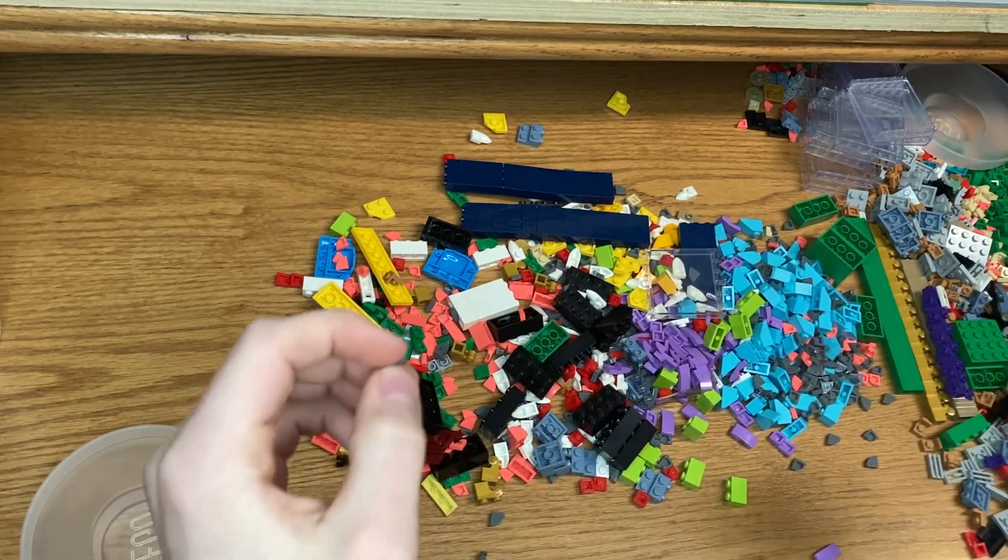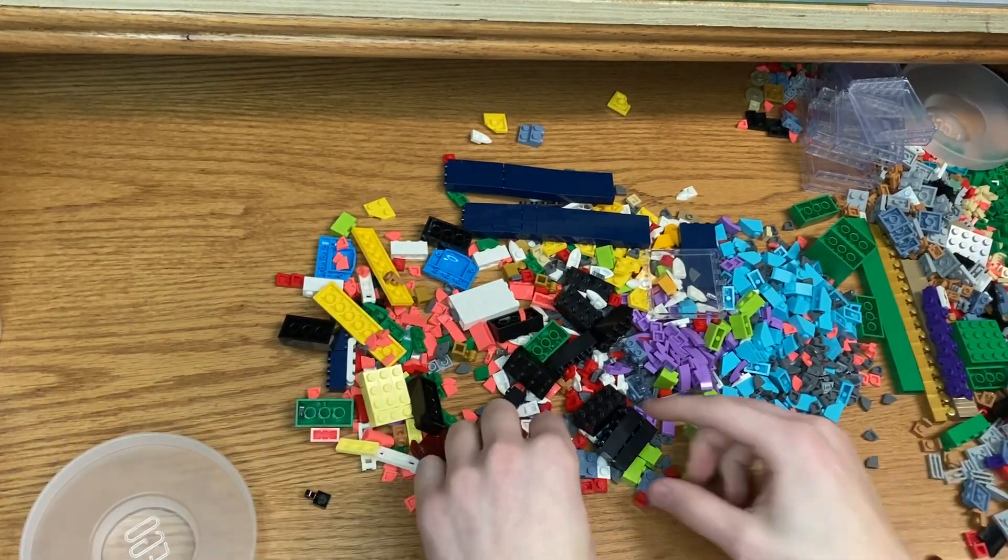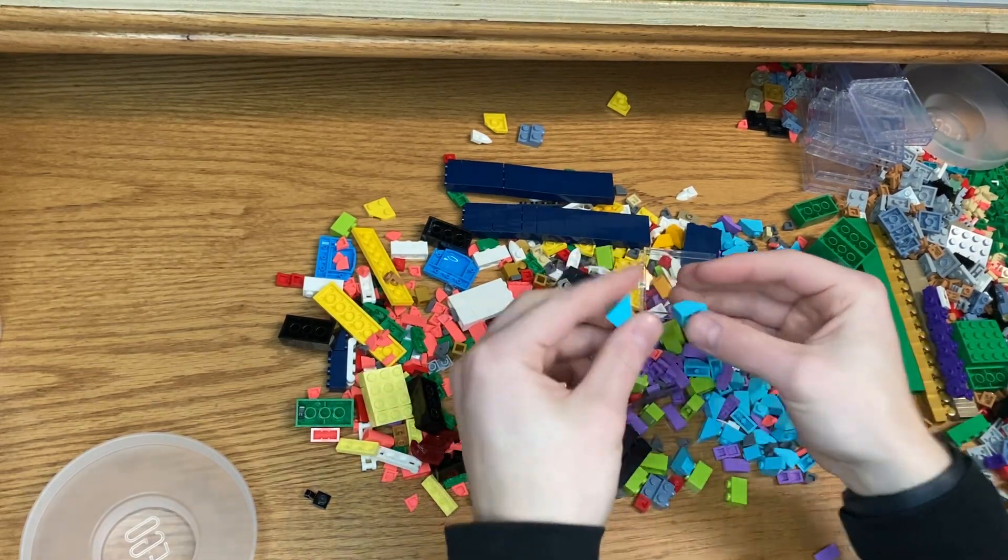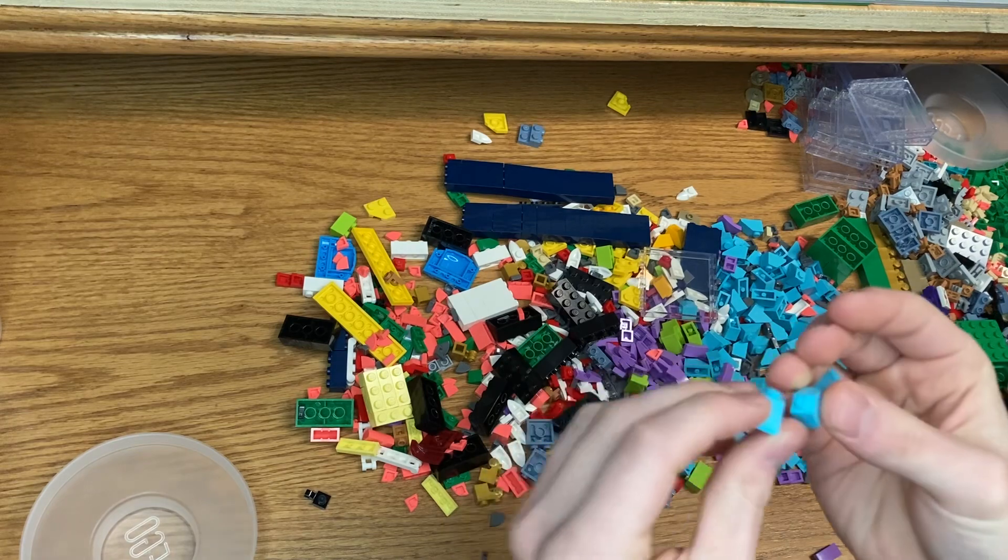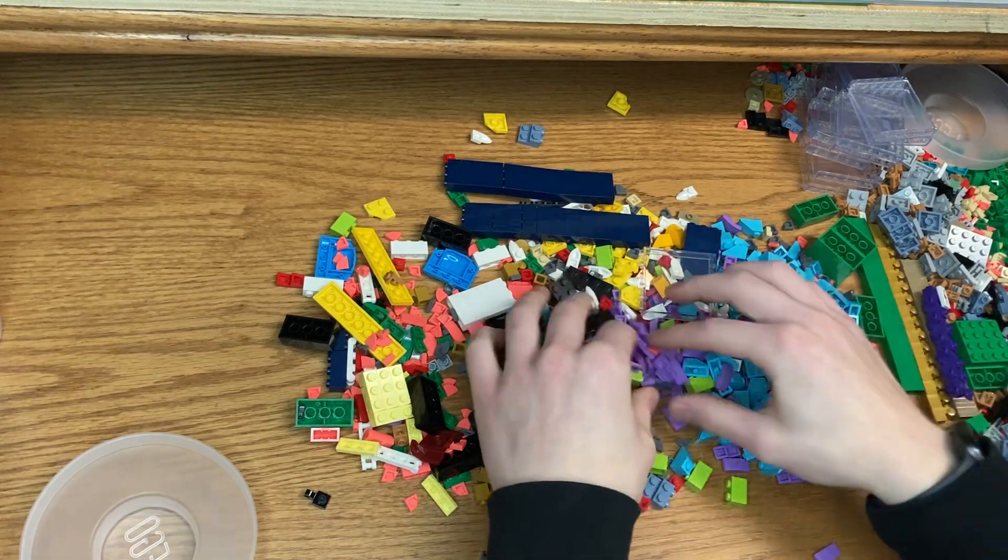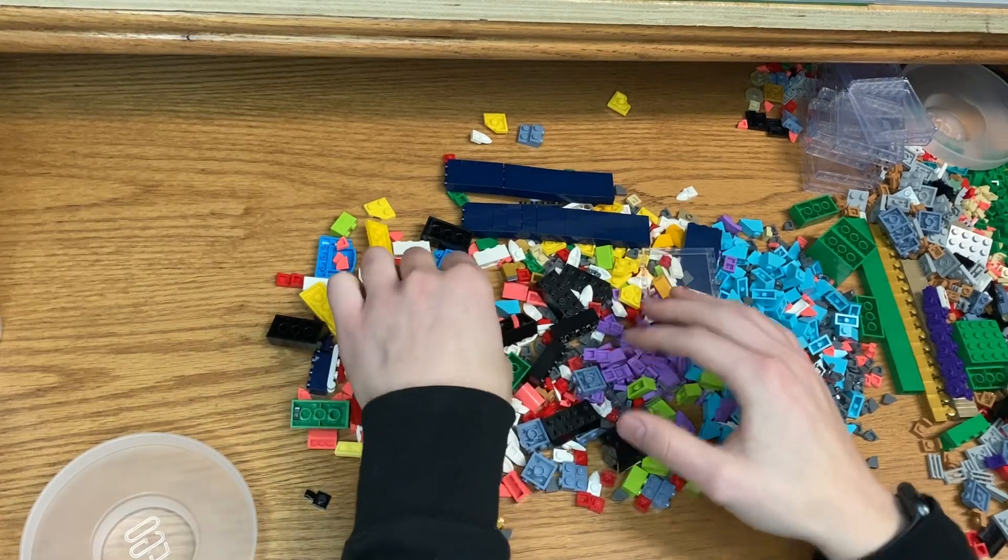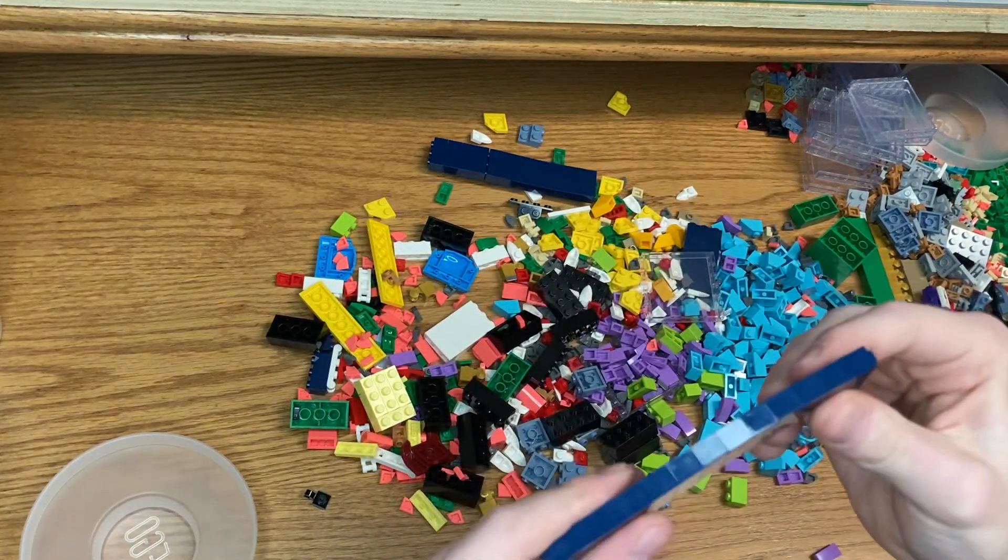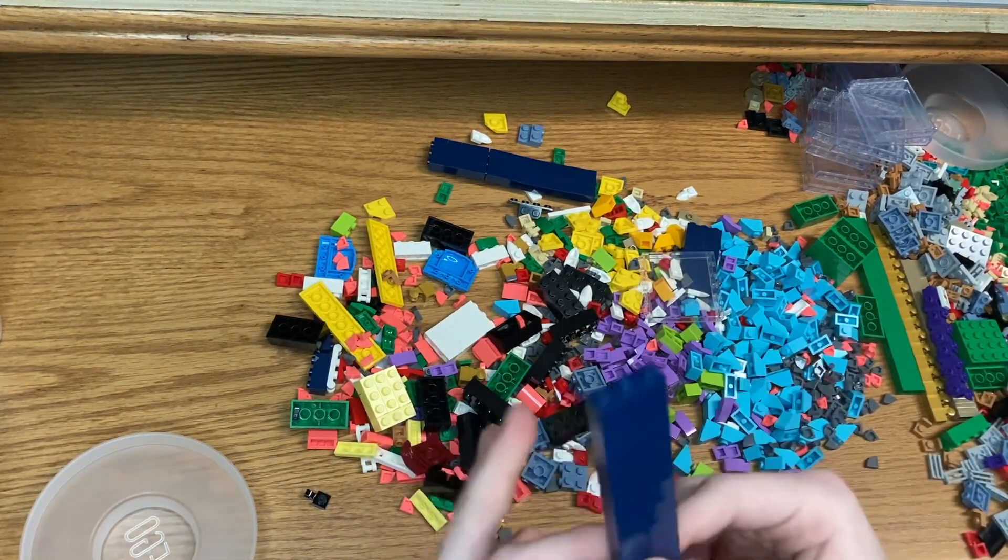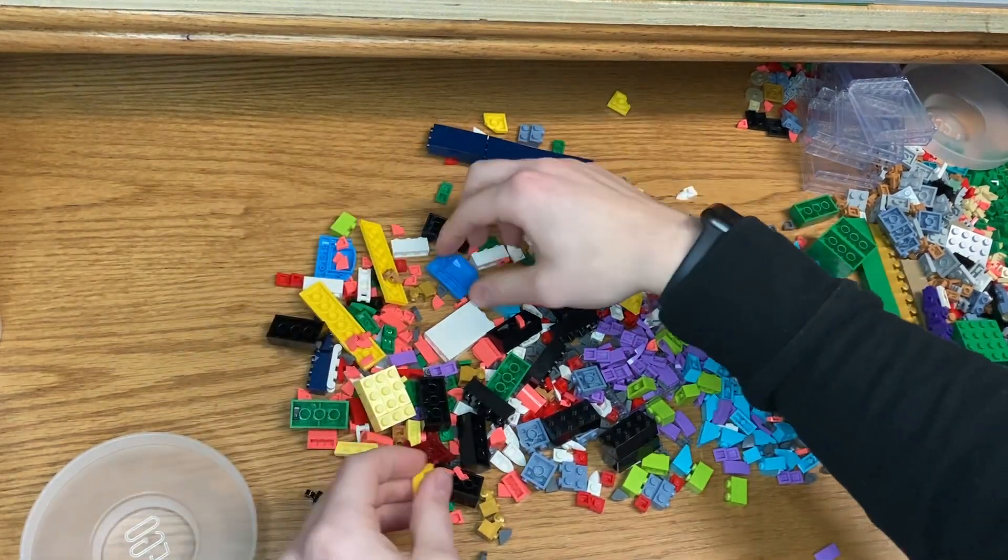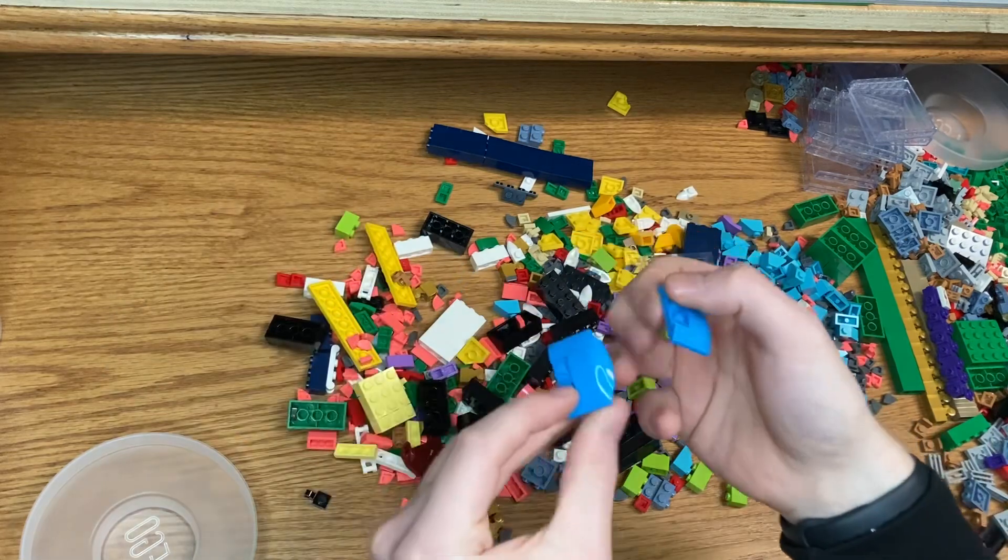Got a bunch of light blue slopes - I don't know what you call these - and then more purple slopes. Just some bricks here, one by three bricks. I really love the blue, so that was a good steal. I picked up these just because why not.